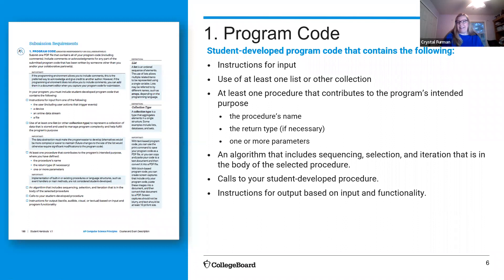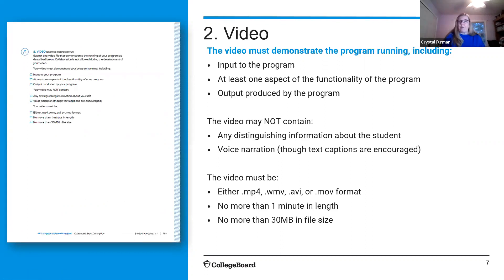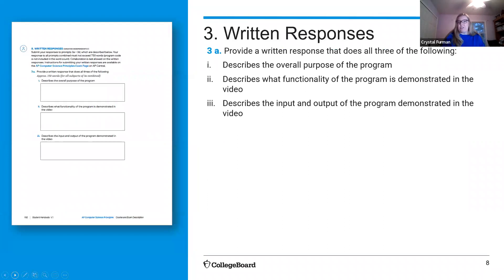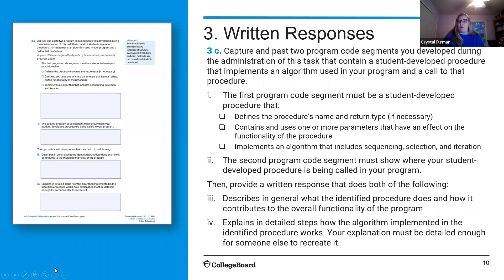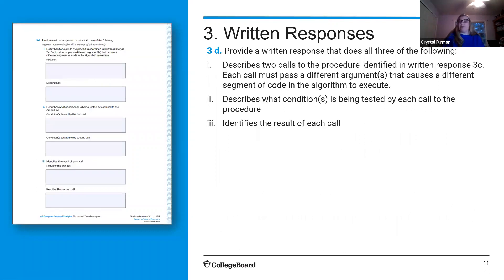The CREATE performance task has three parts. Students create a program — they can do this collaboratively. It has to have a list used to manage complexity, a procedure that includes an algorithm, and input/output with some kind of functionality. They also have to create a video of it running, and then answer four written responses: 3A about program functionality, 3B about lists and managing complexity, 3C about the procedure and algorithm, and 3D about testing.